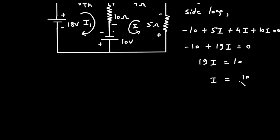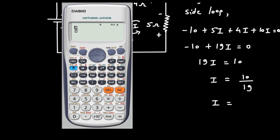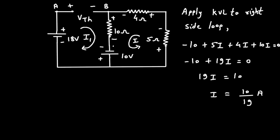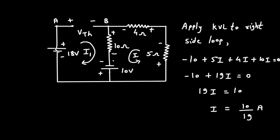Therefore I = 10/19. We'll keep 10/19 ampere as it is to get the precise answer. Now let's apply KVL on the left side.